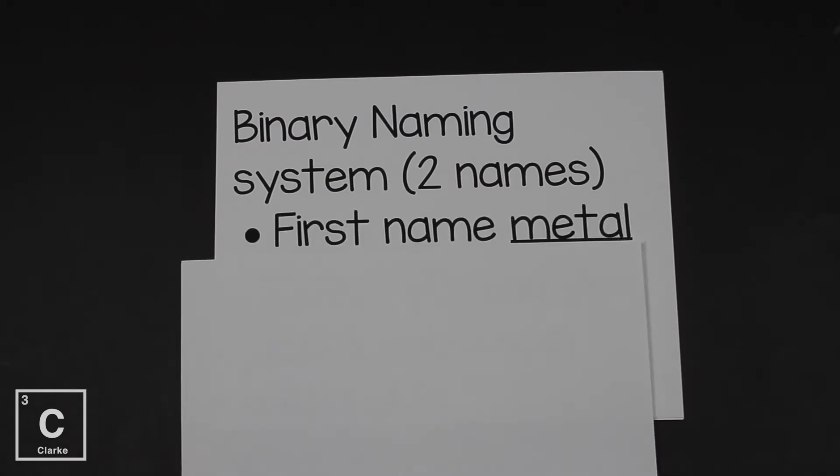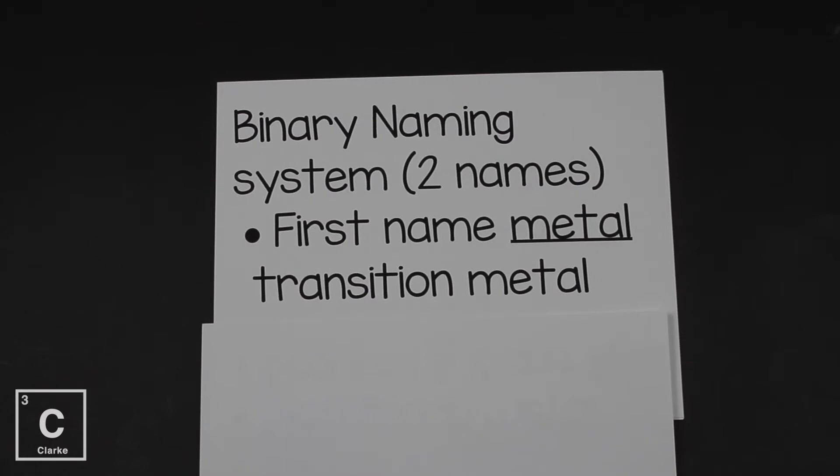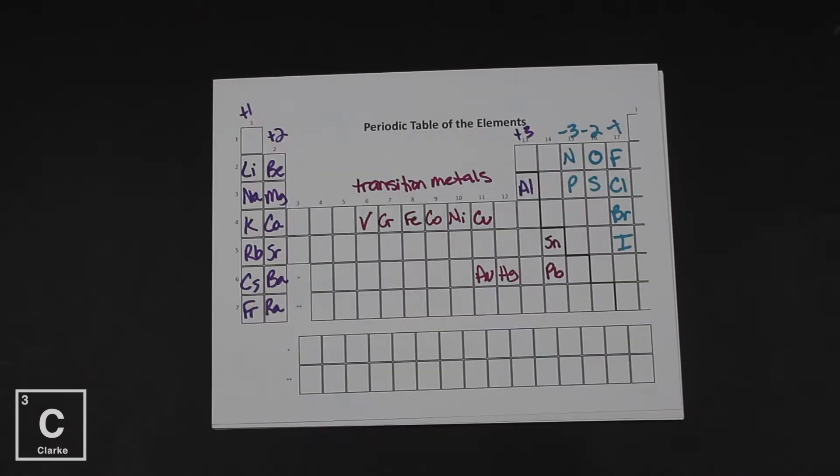The first name is the metal and this time we're talking about transition metals. Remember the transition metals, those are groups 3 through 12. There are way more transition metals than I have on my periodic table. I just wrote in the most popular ones. These are going to be some of the ones that we're about to look at. But really and truly, all transition metals are all of these groups from 3 through 12.